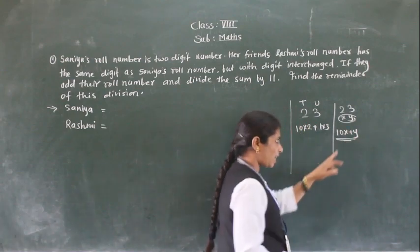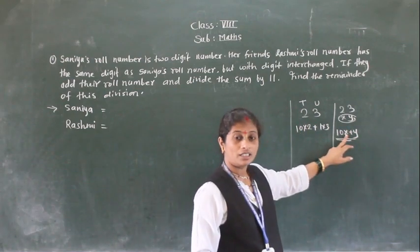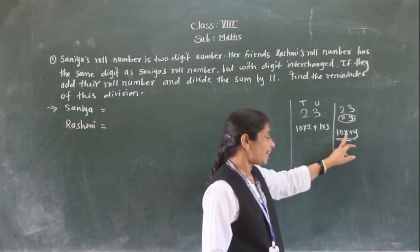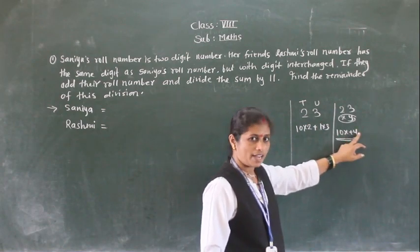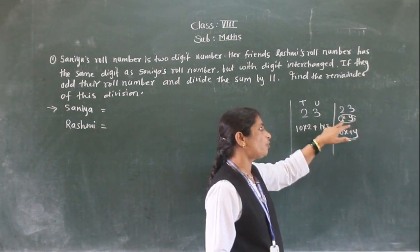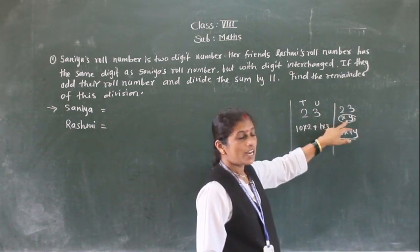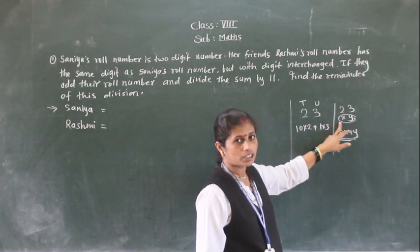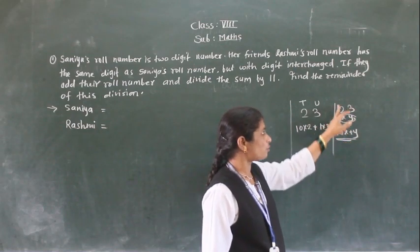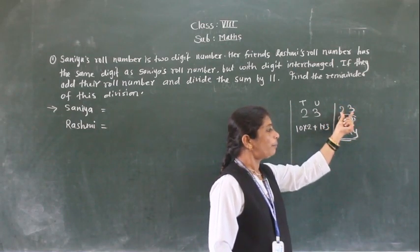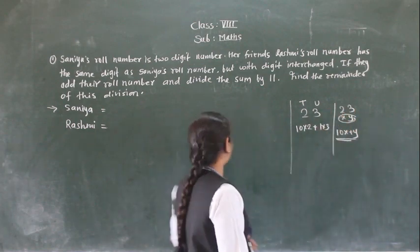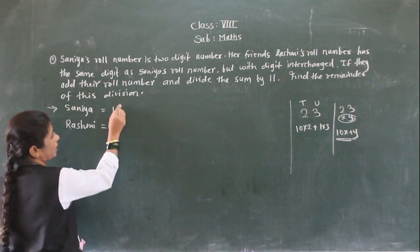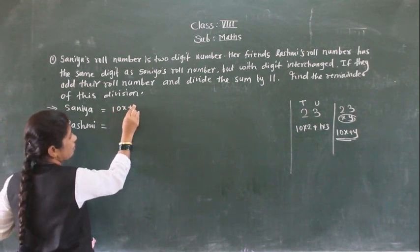Understood? So what do you know — the digits are in the tens place and units place. That gives 10x plus y, right? So actually what is the two-digit number? It is 10x plus y. This is the way to express a two-digit number. So we can take Samia's roll number as 10x plus y.